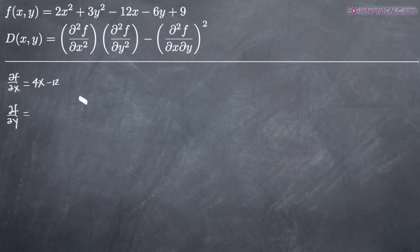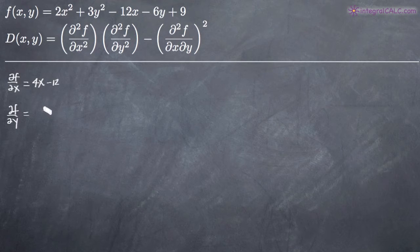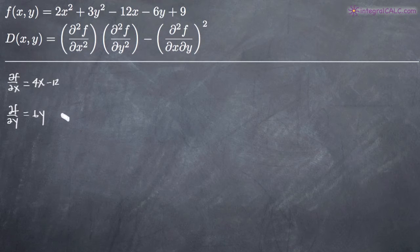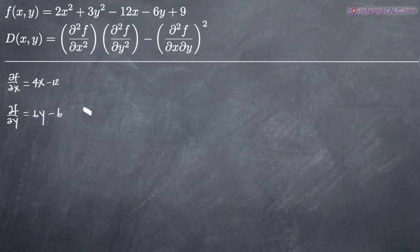For the partial derivative of f with respect to y, we treat y as the variable and hold x constant. The derivative of 2x squared is 0, the derivative of 3y squared is 6y, the derivative of negative 12x is 0, the derivative of negative 6y is negative 6, and the derivative of 9 is 0. So the partial derivative of f with respect to y is 6y minus 6.